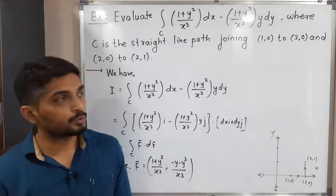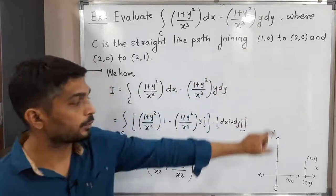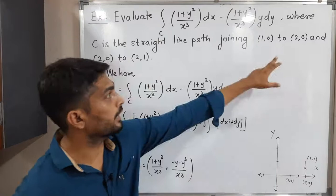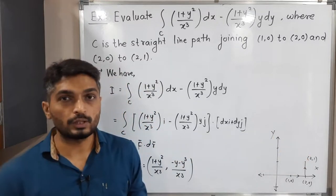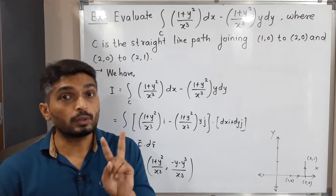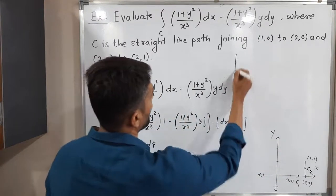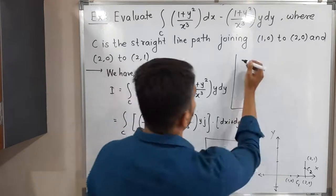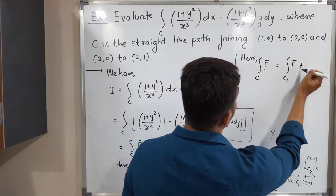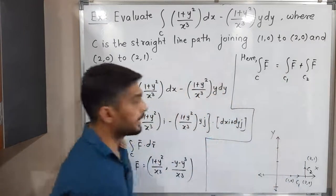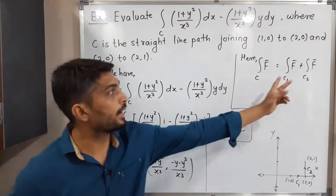Now let us consider the given curve. They have clearly mentioned c is a straight line path joining (1, 0) to (2, 0), and after that from (2, 0) to (2, 1). So c is made up of two straight lines — I will call the first one c1 and the second one c2. Therefore, integration of f-bar over c can be calculated as integration of f-bar over c1 plus integration of f-bar over c2. We will find the value of the line integral separately along c1 and c2 and then add them to get the required answer.